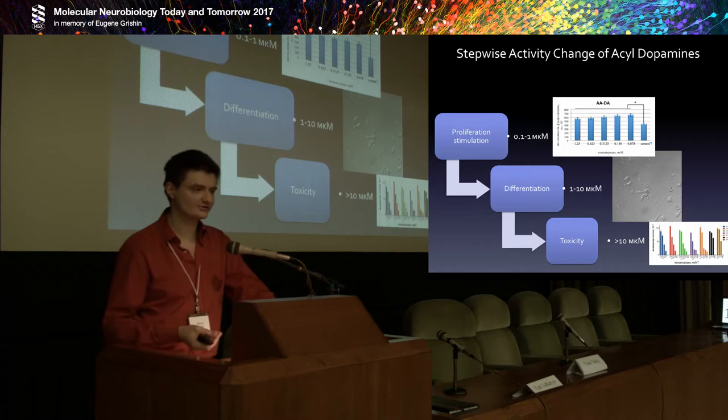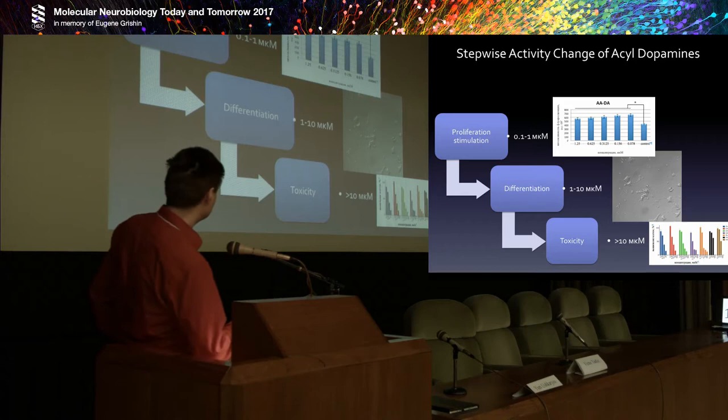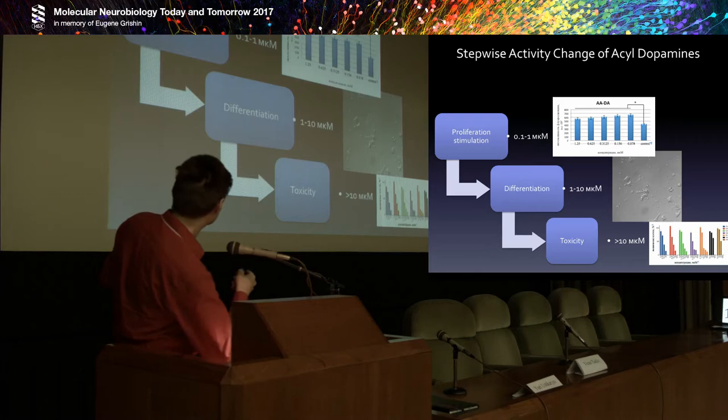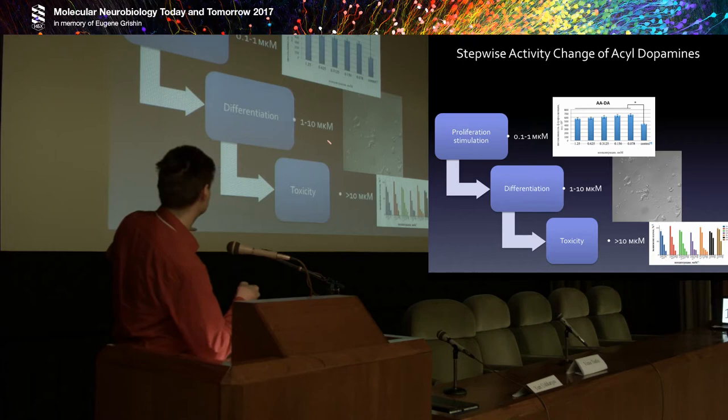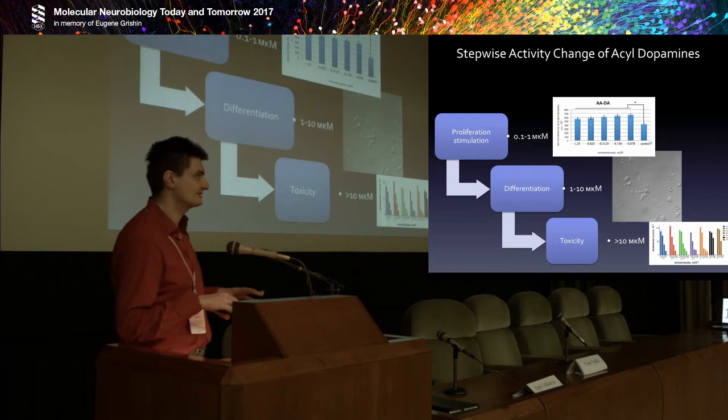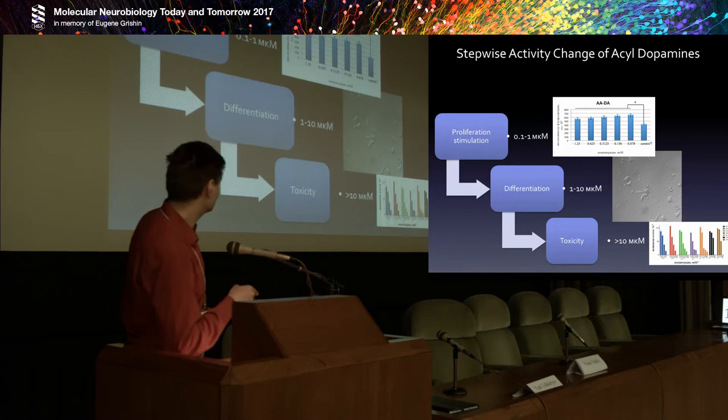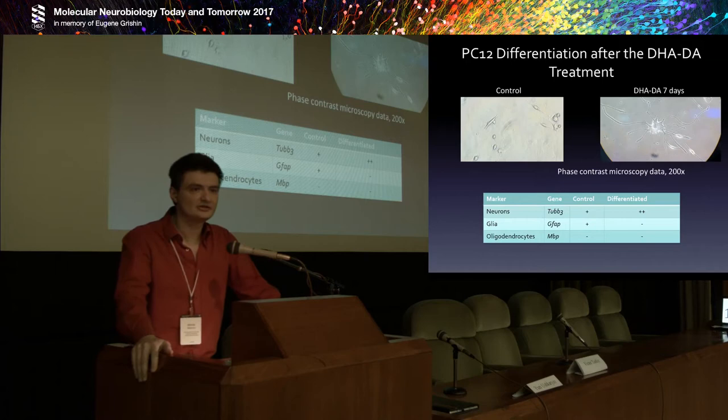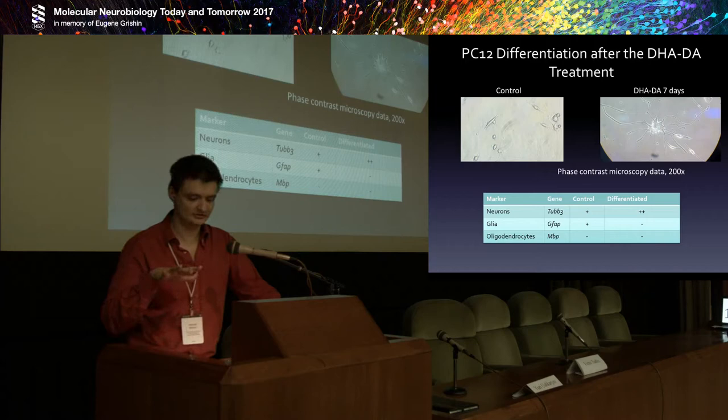These surviving cells had processes and we hypothesized that this was differentiation induction. So the overall scheme of substance activity was: at low concentrations they induced cell proliferation, then cell differentiation, and when the concentration of N-acyl dopamines reached some critical level, most or all cells died. When we analyzed the differentiation marker expression, we confirmed our hypothesis about differentiation induction.